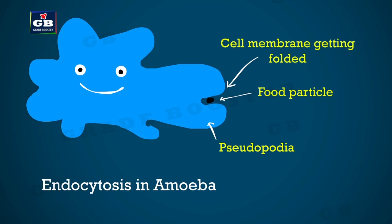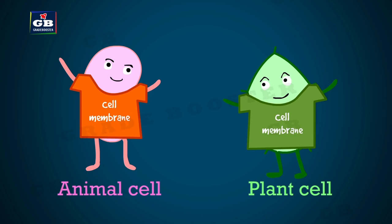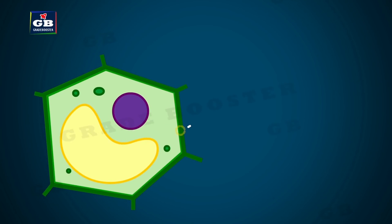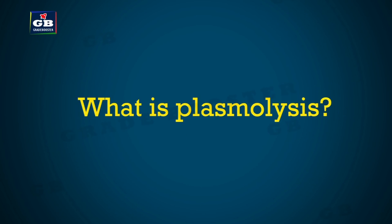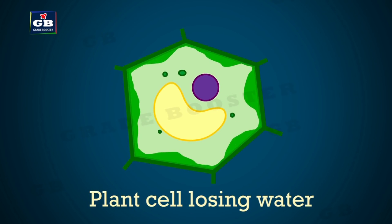Both plant and animal cells have a cell membrane, but plant cells also have an outer rigid cover called the cell wall. The plant cell wall is made up of cellulose, which gives strength to plant cells. Sometimes plant cells undergo plasmolysis — when the water present in a living plant cell is lost through osmosis, the contents of the cell shrink away from the cell wall; this phenomenon is known as plasmolysis.